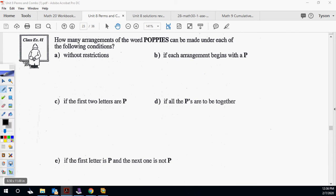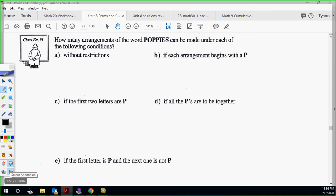How many arrangements of the word POPPIES can be made under each of the following conditions, without any restrictions? Repetitions is not a restriction, but they are something you have to account for separately. When it says no restriction, that does not mean ignore repetitions. How many letters? Seven, and we're repeating just the P. It's simply 7 factorial over 3 factorial. That gives us 840 arrangements of poppies.